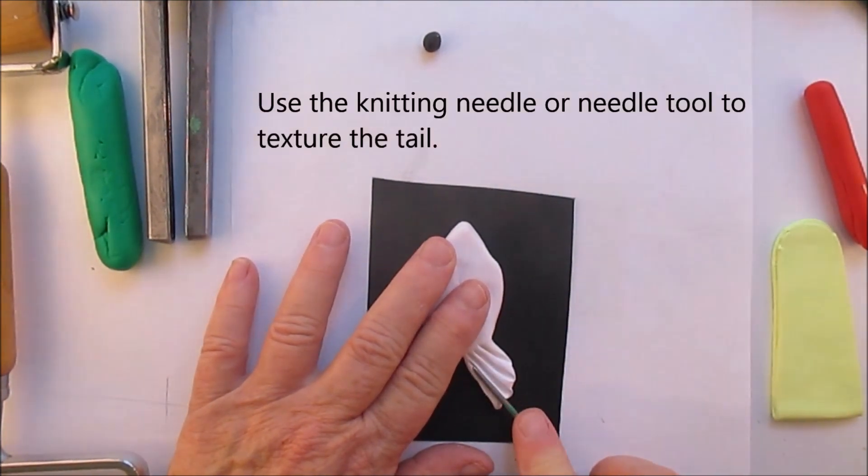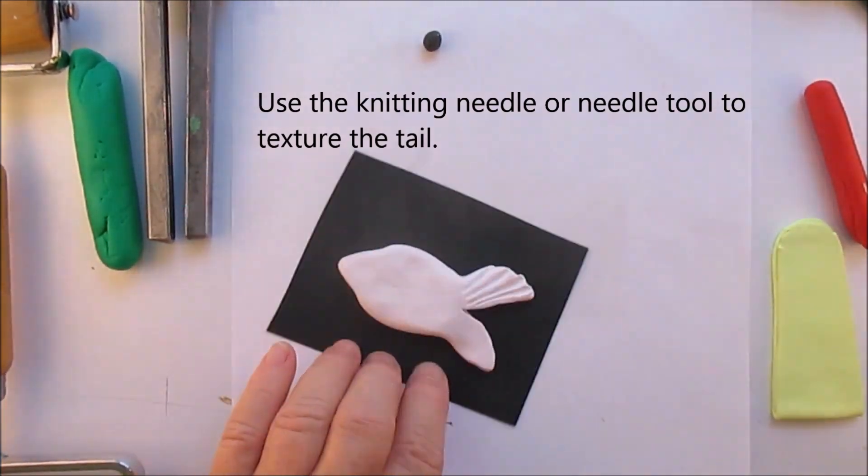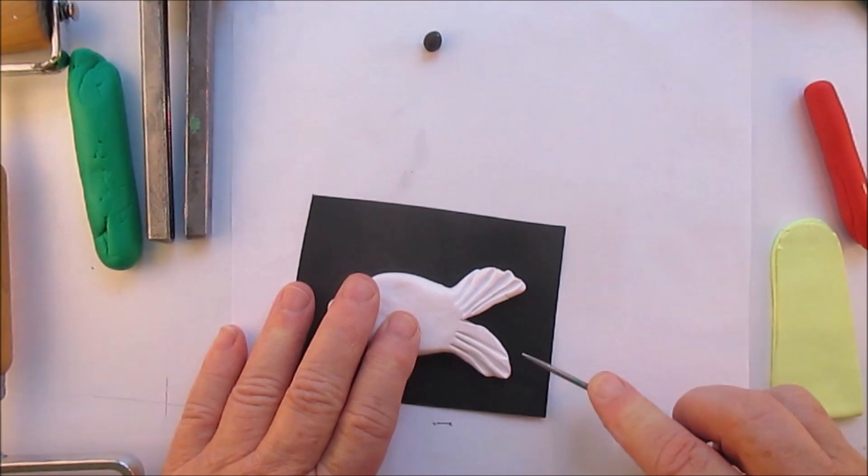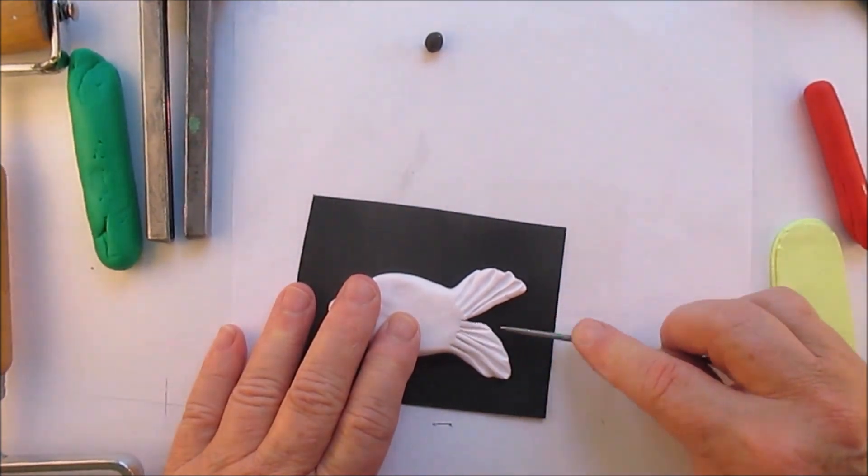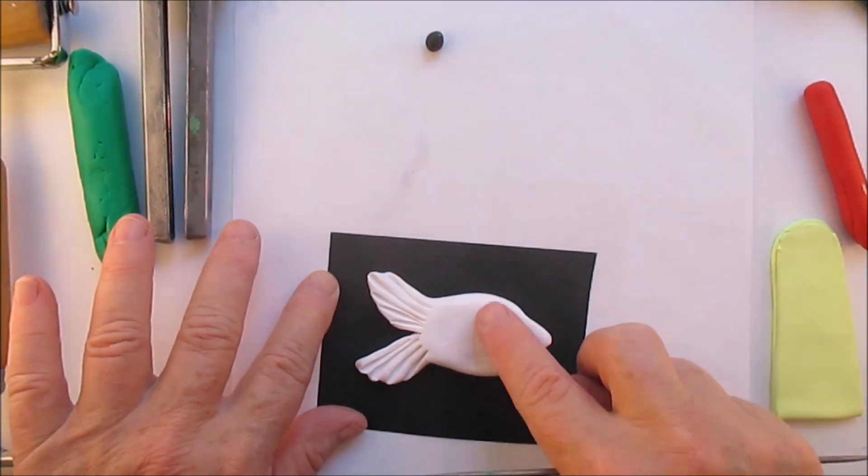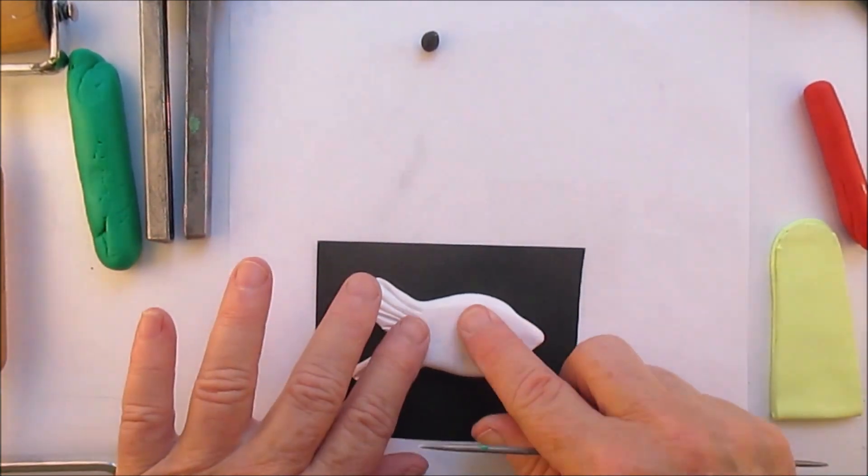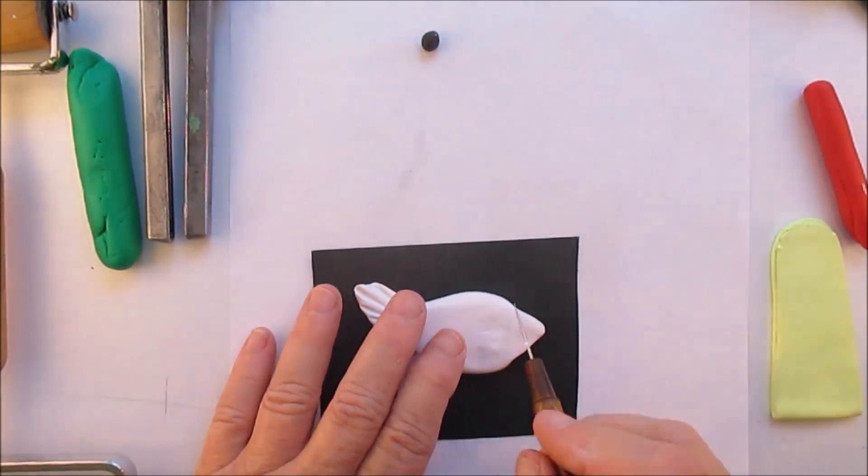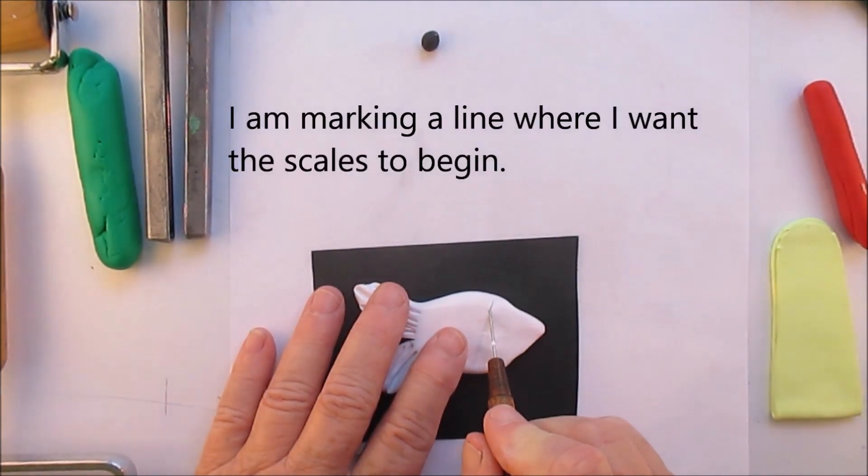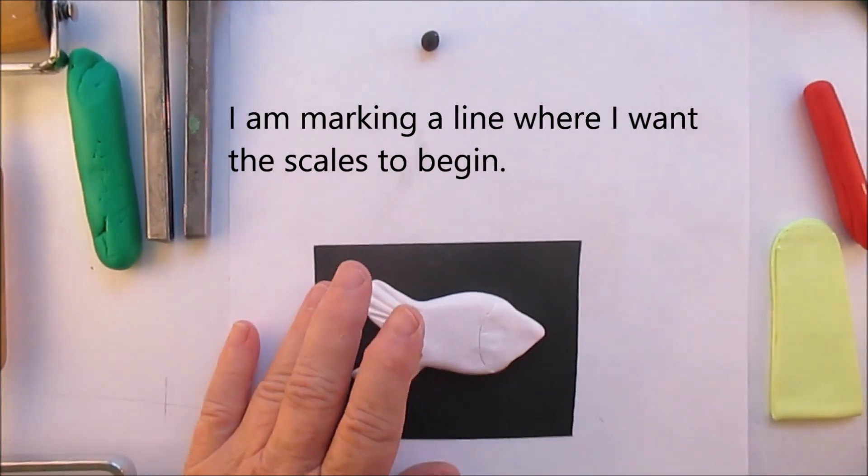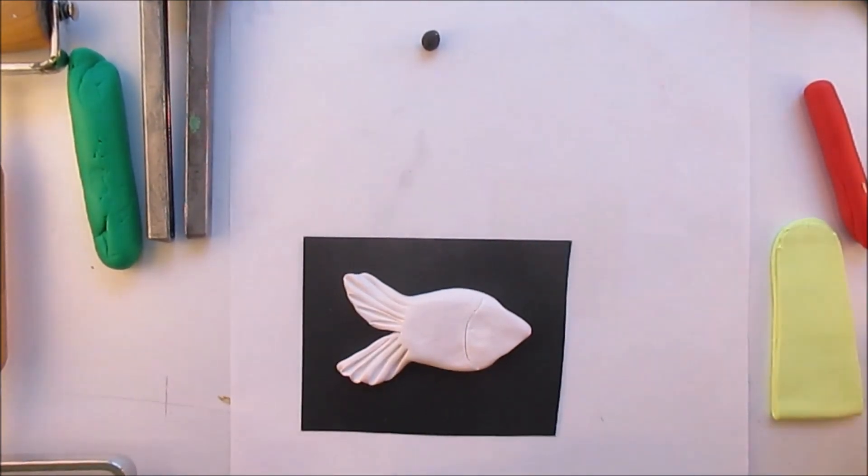I'm going to texture the tail. This ornament is about, I would say, three inches long. You can make it bigger or smaller, make it any size you want. Just make a line there. Behind that line, you're going to make your scales.